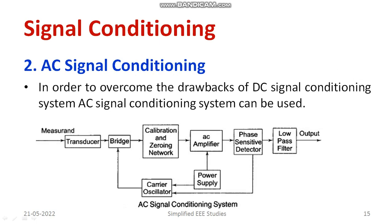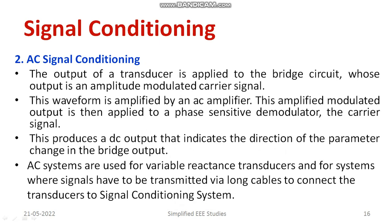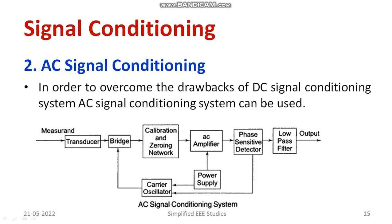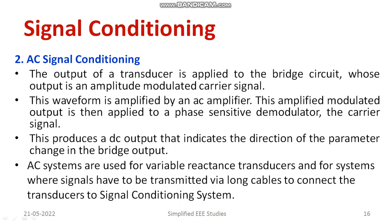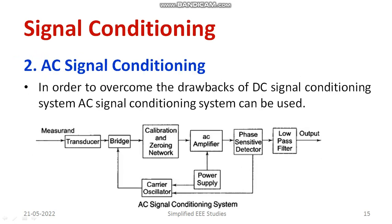In order to perform modulation and demodulation, there must be a carrier oscillator. This procedure produces a DC output that indicates the direction of parameter change at the bridge output. There is also a feedback path visible in the diagram. AC systems are used for variable reluctance transducers and for systems where signals must be transmitted via long cables — applications such as variable reluctance transducers and LVDTs are well-suited for AC signal conditioning devices.